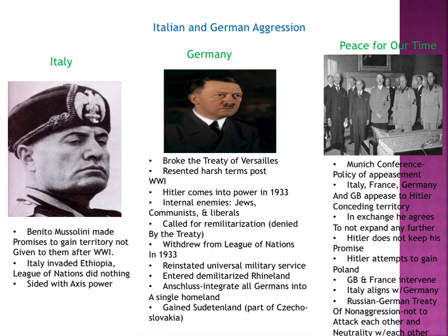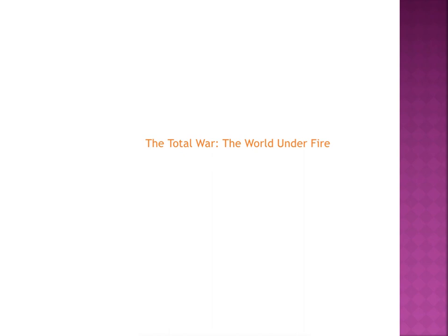Italy saw the power Germany had and how easily others gave in to Germany's requests, so they aligned themselves with Germany. Russia also saw what happened with Germany and how everybody had been conciliatory to them, and they created the Russian-German Treaty of Non-Aggression — essentially saying they were not going to attack each other and would remain neutral. This would all lead into total war.